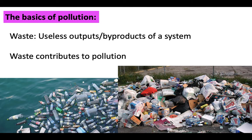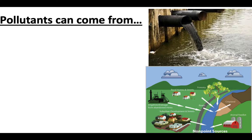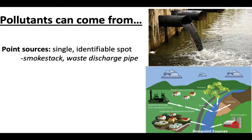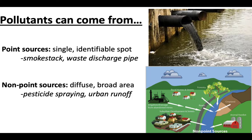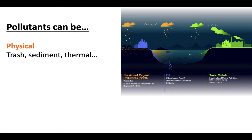The basics of pollution: waste is just the useless outputs of a system, and we produce a lot of it, particularly in the United States. Pollutants can be categorized in one of two ways — they can come from a point source, which is a single identifiable spot like a water discharge pipe or a smokestack, or from non-point sources, which gather from a large broad area like pesticide spraying or urban runoff collecting in a watershed.